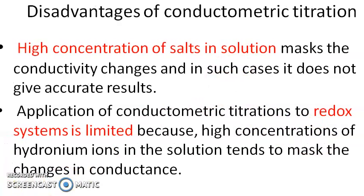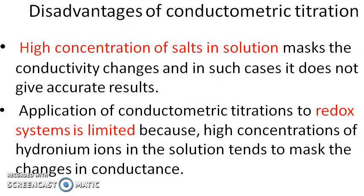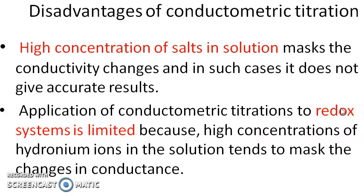However, there are disadvantages as well. A high concentration of salt in solution will mask the conductivity change, and therefore such solutions will not give accurate results. Also, conductometric titration cannot be applied to redox systems; for monitoring redox systems, potentiometric titration is used, which will be discussed in another session. These are the two major disadvantages of conductometric titration.